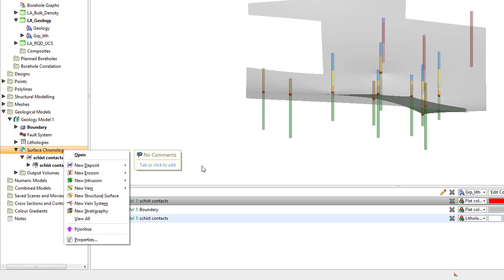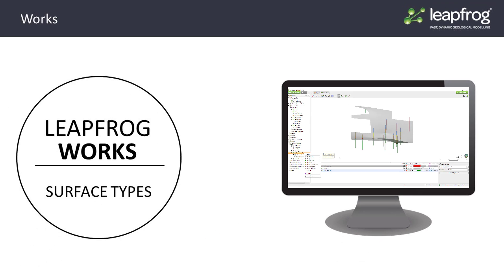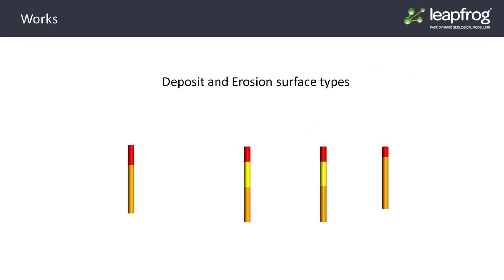I'll start by describing the functionality of the New Deposit and New Erosion surface types. New Deposit and Erosions create exactly the same surfaces. The only difference between them becomes clear when the surfaces are activated to produce output volumes.